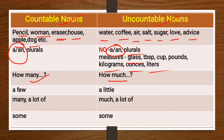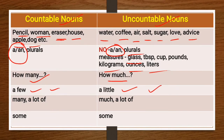When we are not sure of the number or quantity, we use expressions like 'a few' or 'a little.' We use 'a few' for countable nouns and 'a little' for uncountable nouns when talking about small quantities. For example: 'I have a few apples' and 'I have a little water in my bottle.'